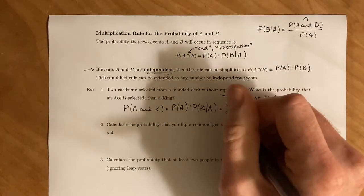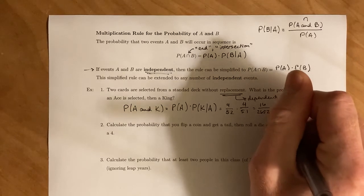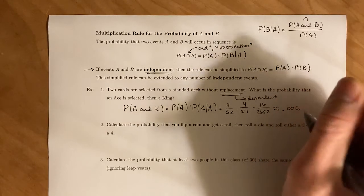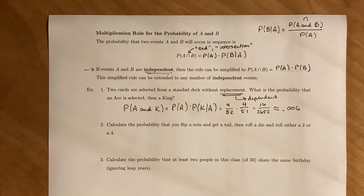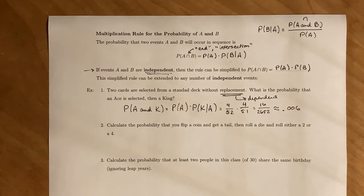and you do 52 times 51, which gives us 2652. Throw that into your calculator, and that roughly gives us 0.006. Cool. So selecting an ace and then a king back to back has about a 0.6% likelihood of happening.